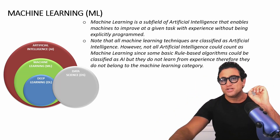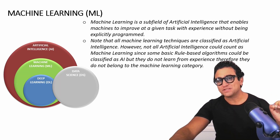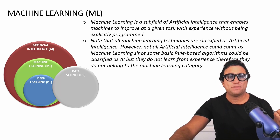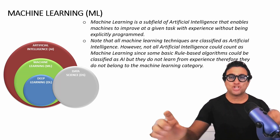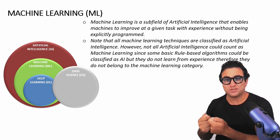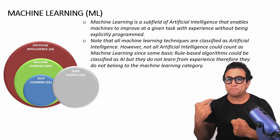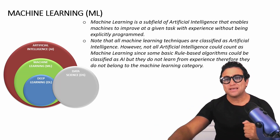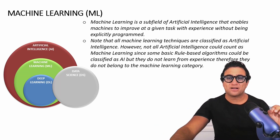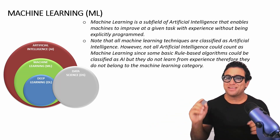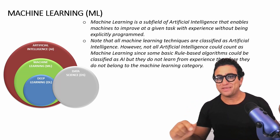However, not all artificial intelligence counts as machine learning. For example, you could be developing an AI application that does not learn from experience and is explicitly programmed. You can explicitly program a machine using rule-based algorithms to do specific tasks — that counts as AI but not machine learning. Don't worry, a great example is coming up in the next couple of slides.